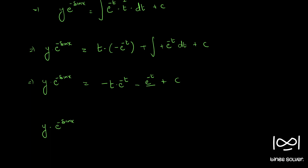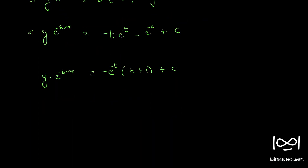Writing this as minus e raised to minus t, if we take minus e raised to minus t common, we get minus e raised to minus t into (t plus 1) plus C. Now substituting back for t, we have y·e raised to minus sin(x) equal to minus e raised to minus sin(x) into (sin(x) plus 1) plus C.